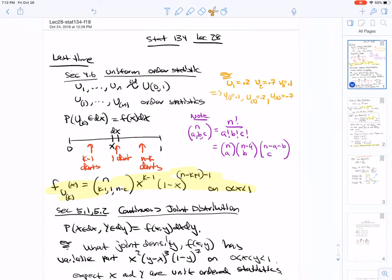Then U(1) to U(n) are called the order statistics and these are just those darts in order. The probability that the kth order statistic is in dx, which is f(x)dx, will allow us to figure out what the density of the kth order statistic is.